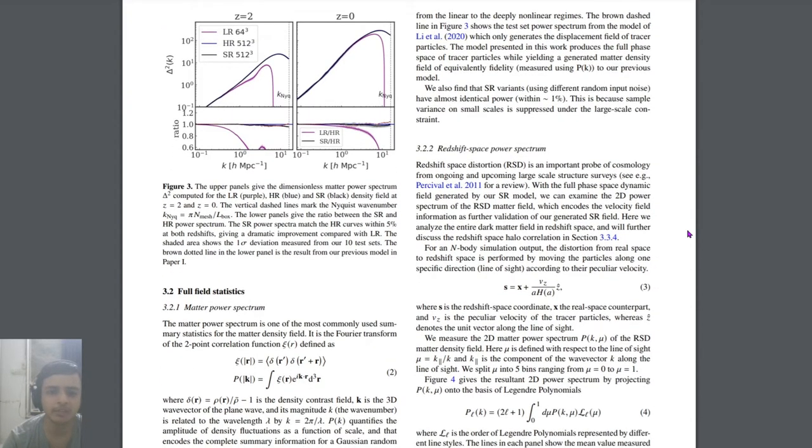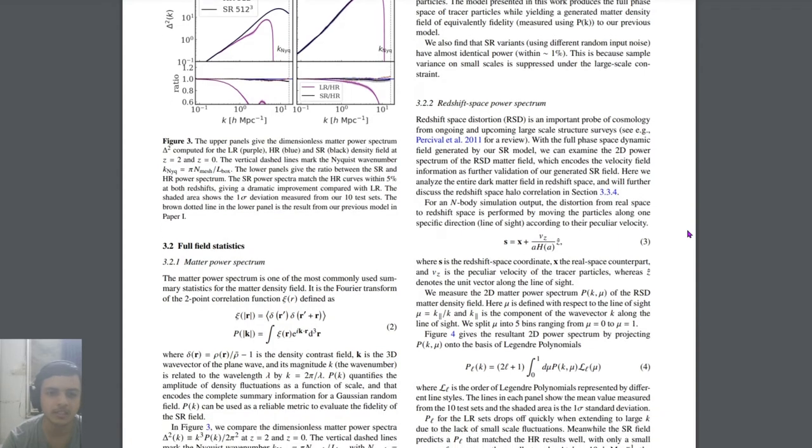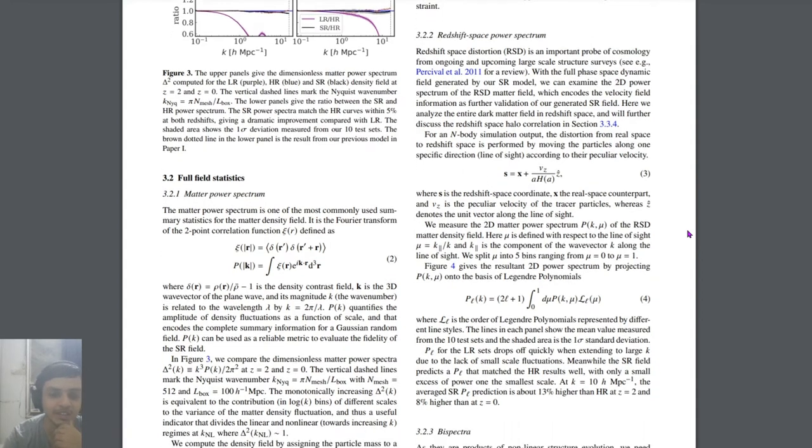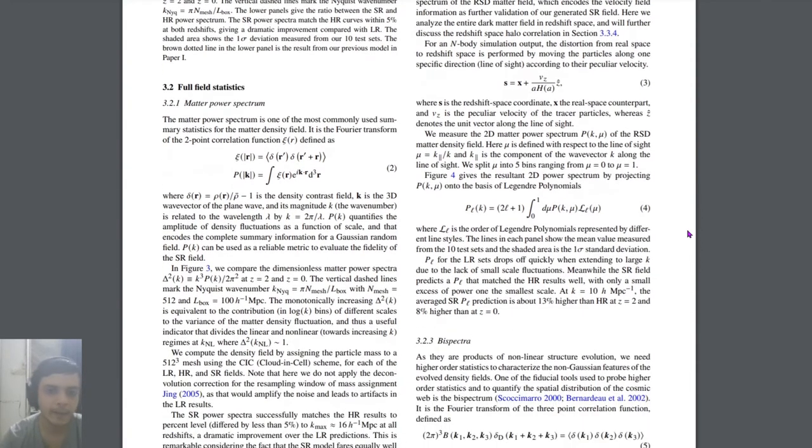This is now very technical - talking about the statistics. This matter power spectrum is a statistic for a matter density field, and it takes the Fourier transform for two-point correlation function. Explaining Fourier transforms and correlation functions will take hours.